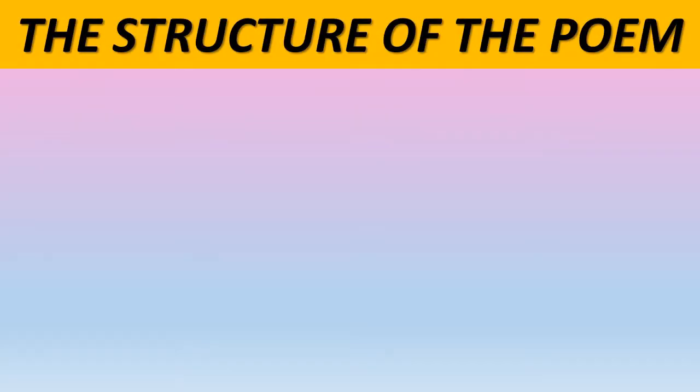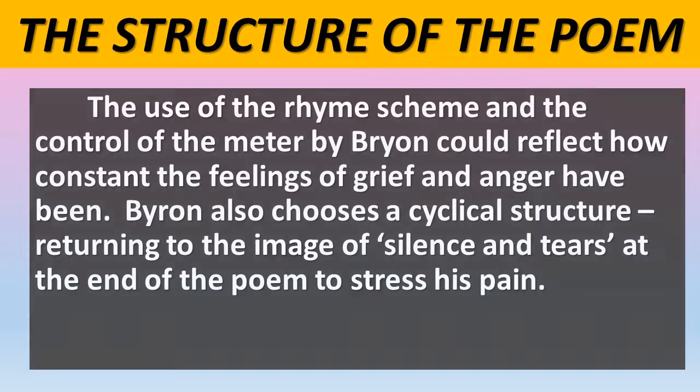After that, I need to talk about the structure of the poem. The use of the rhyme scheme and the control of the metre by Byron could reflect how constant the feelings of grief and anger have been — they have not changed or subsided over the years. Byron also chooses a cyclical structure, returning to the image of silence and tears at the end of the poem to stress his pain. So we understand what the poem is about and the structure of it.